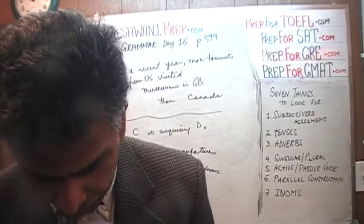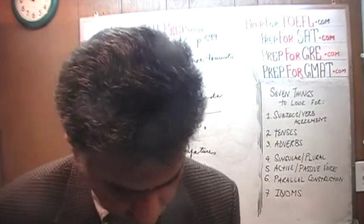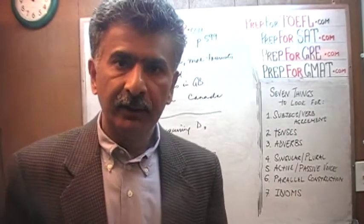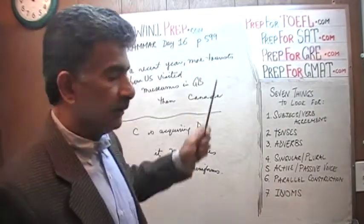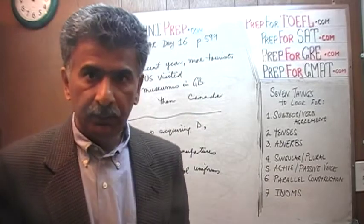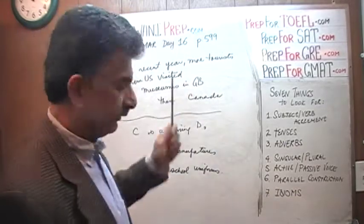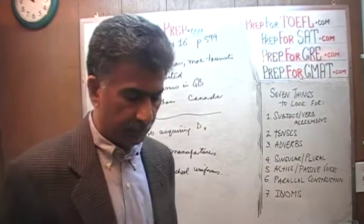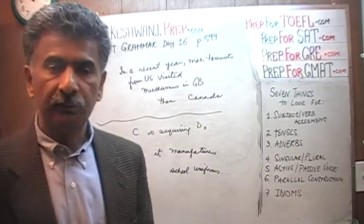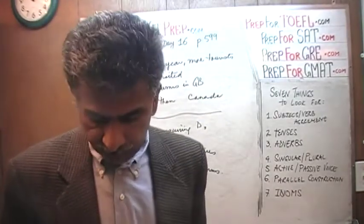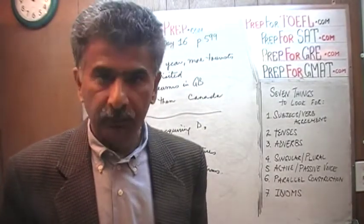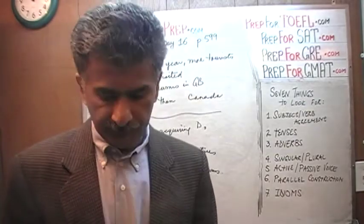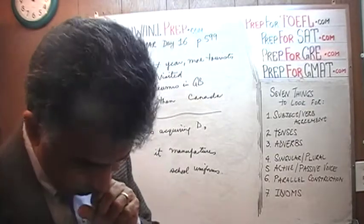The problems we are about to solve are the ones on page number 599. Please turn to it. Today is our lesson number 16. There are 11 questions on a scale of 1 through 11. The first 5 on that page are all easy questions. Let's see what we can do here — number 1.